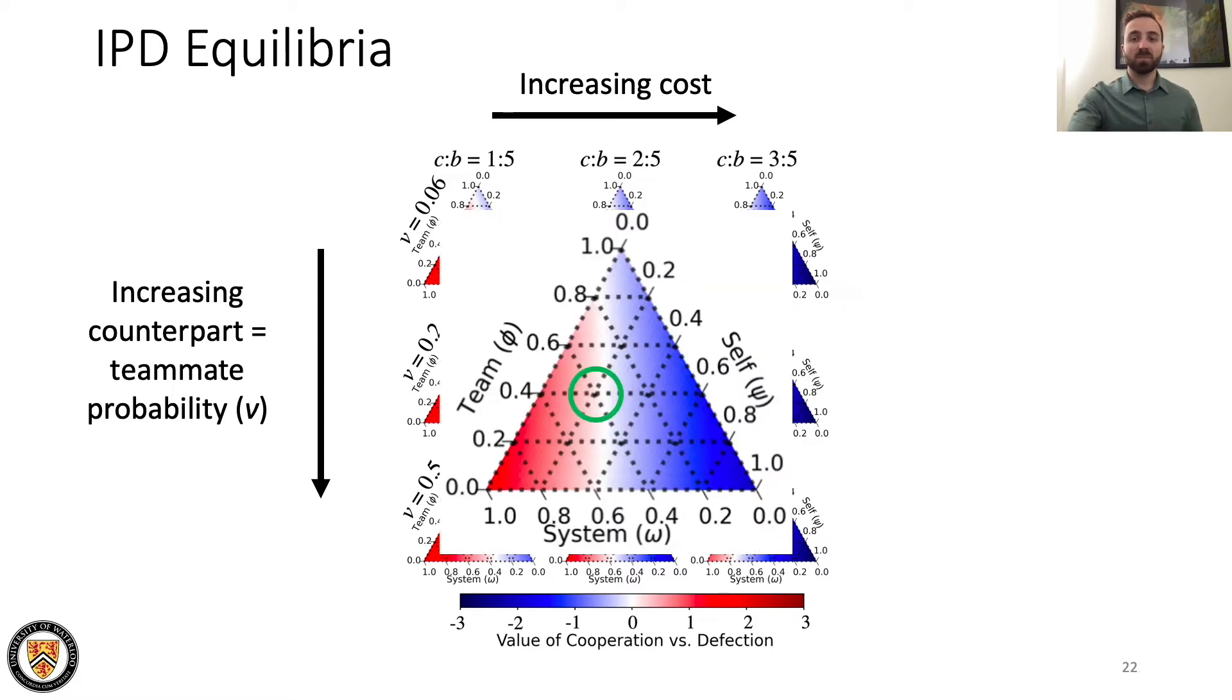To first help interpret these plots, the color at this point represents when agents are 20% self-focused, 40% team-focused, and 40% system-focused.